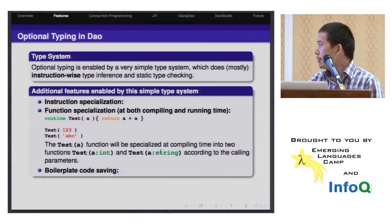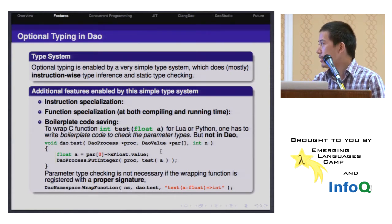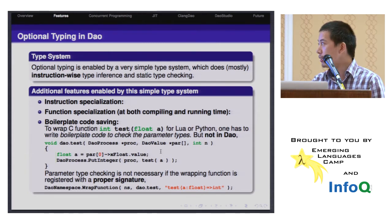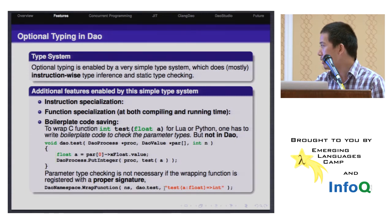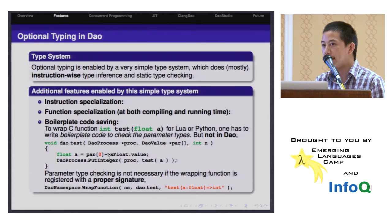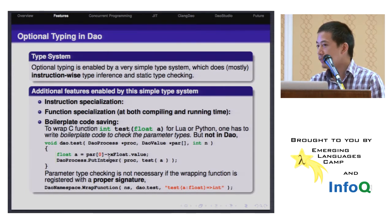Another useful thing for optional typing is when you write extending code in C - it can save you from writing a lot of boilerplate code to check the parameter types. Because when you write a function with a typed signature, this function will be called only when the parameter passed to it is guaranteed to have that type, for example a float. So you don't need to do type checking - you just use it as a float. This is quite different from writing extending code for Lua and Python, because in those languages you have to write quite a lot of boilerplate code.